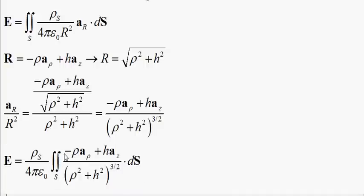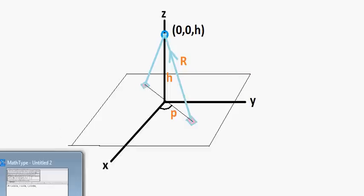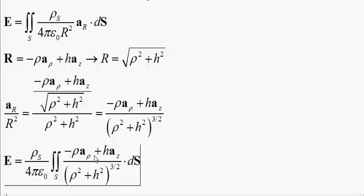We have contributions from the electric field in the rho and the Z direction. But if you look at this geometry, any contribution in the rho direction — like this little pink square right here — is going to be cancelled out by the one on the opposite side. This is going to happen all around. So consequently there's no contribution in the rho direction, because there's always one across from it with the opposite sign that cancels it out. This can be proven just by integrating with certain limits.